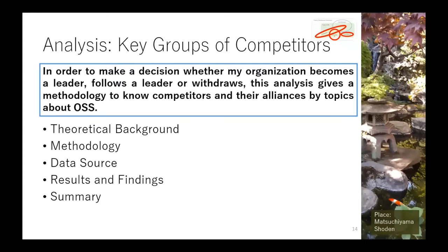The second analysis is about the key groups of competitors. In order to make a decision whether my organization becomes a leader, follows a leader, or withdraws, this analysis gives a methodology to know competitors and their alliances by topics about OSS. For this analysis, I explain theoretical background, methodology, data sources, results, and findings.